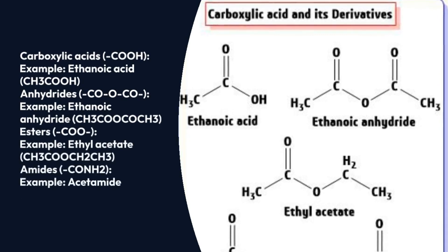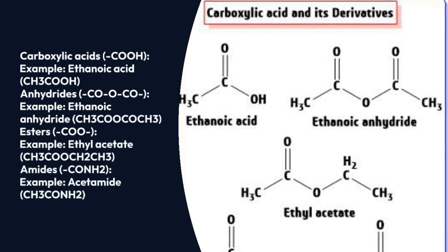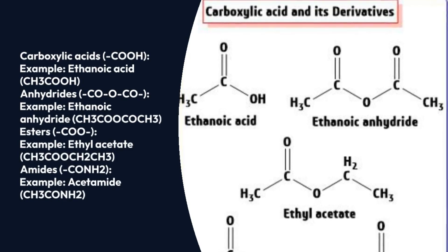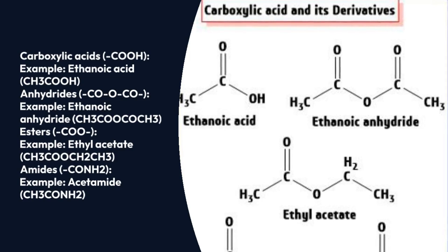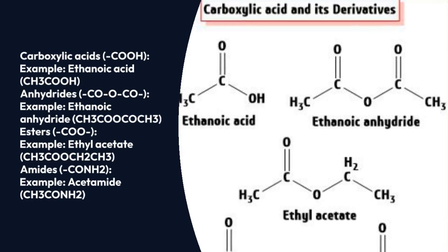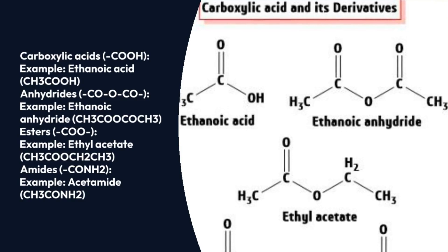Carboxylic acid, anhydrides, esters, and amides are the functional groups that get first priority. For carboxylic acid, the example is ethanoic acid; for anhydride, ethanoic anhydride; for ester, ethyl acetate; for amide, acetamide.